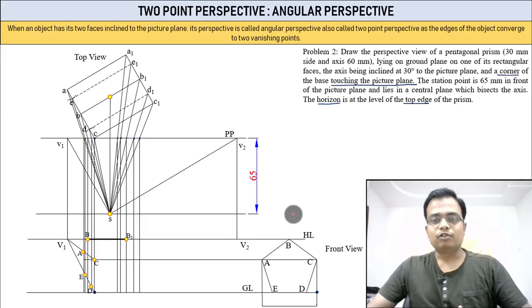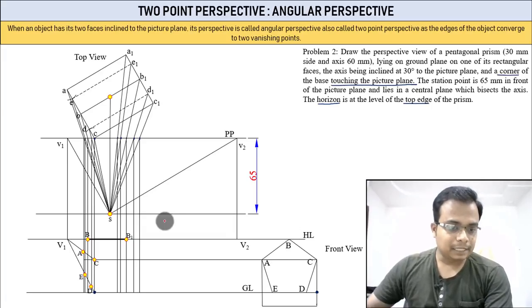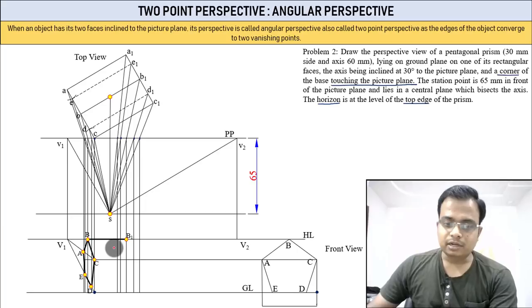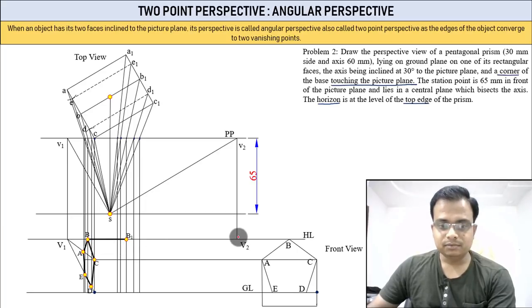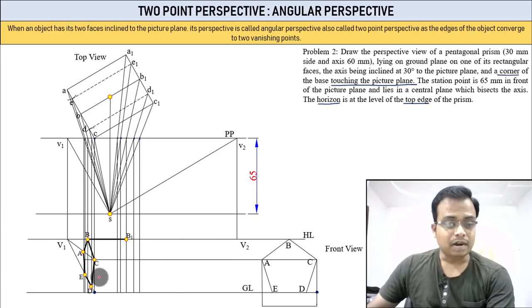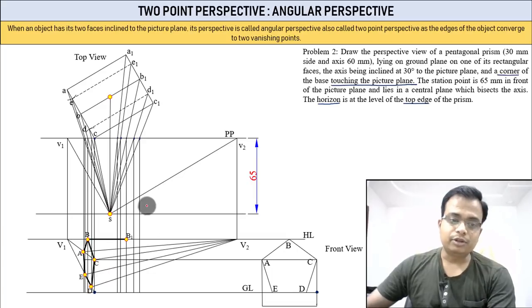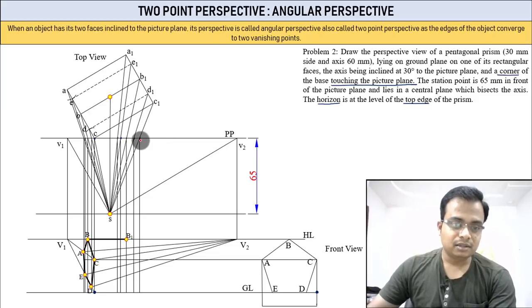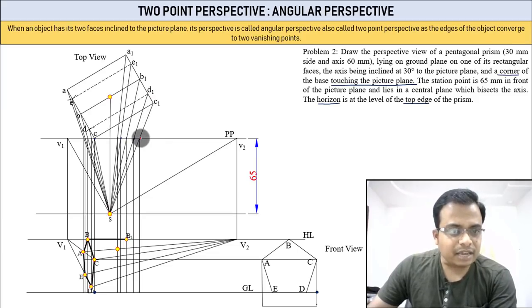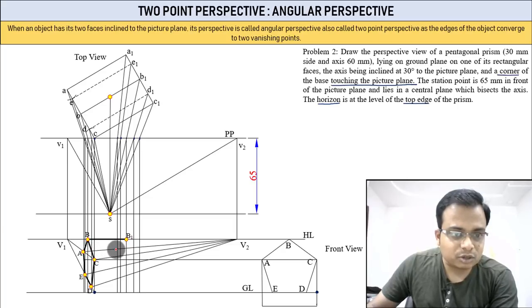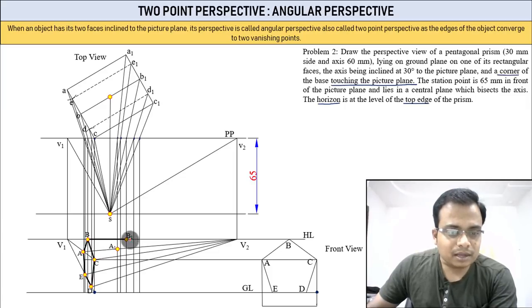This may seem tough the first time, but once you get through this problem your confidence will definitely rise — and you can solve any problem from any textbook or university exam. From B draw a line, from A draw a line to V2, from C toward V2, and from E and D also draw lines approaching V2.